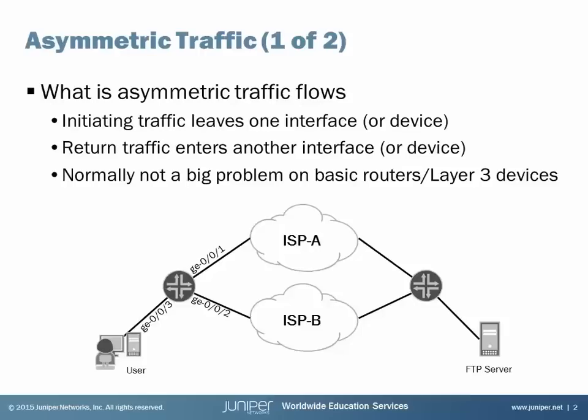As you can tell, there are a few paths the user can take. However, the user's local router is going to use GigE0/0/1 to get to ISP-A primarily. These other devices the administrator of this local router has no control over. With asymmetric traffic, we have initiating traffic leaving one interface through ISP-A, and then the return traffic entering on a different interface. This creates asymmetric traffic, whereas if it were symmetric, the return traffic would come back through ISP-A on GigE0/0/1.